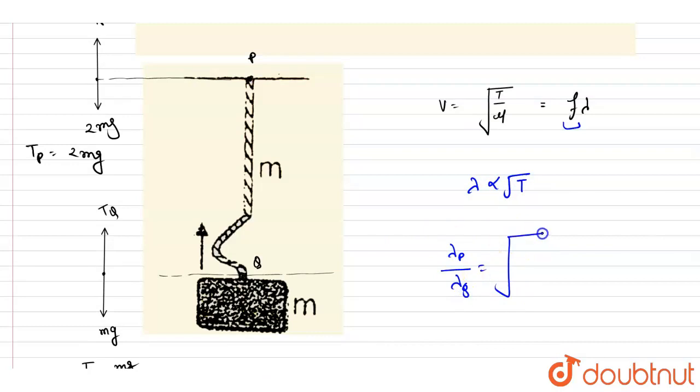This equals √(wavelength at P / wavelength at Q) = √(tension at P / tension at Q). √(2mg/mg) = √2.